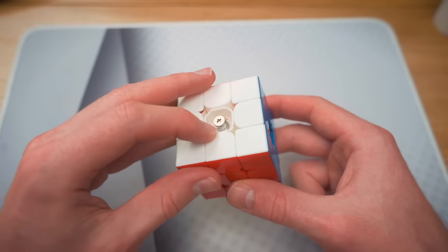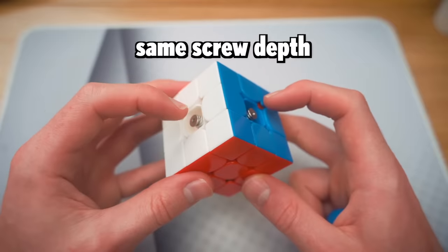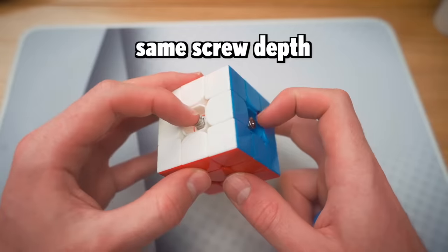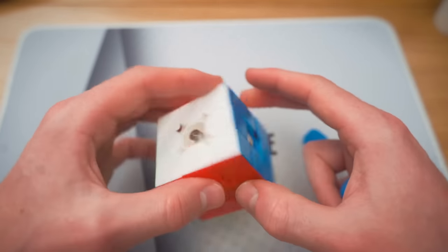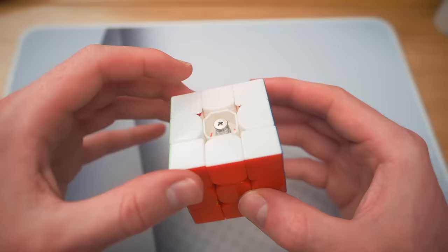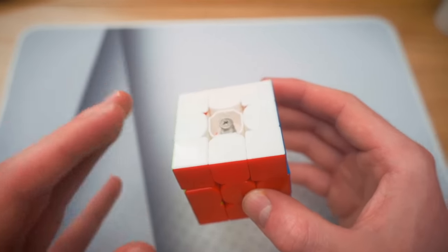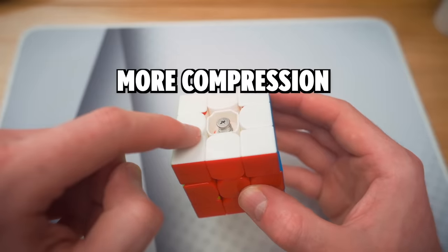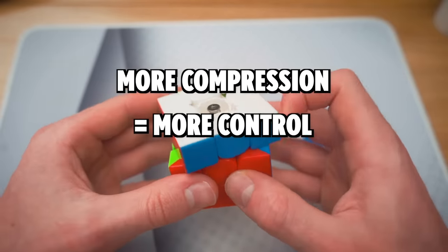The longer spring is on the white side and the normal spring on the blue side. Now, if I set both screws to the same setting, so basically the tightness of the cube, the corner cutting should be the same on both puzzles. The difference is that this spring is more compressed, thus the pieces are getting pushed more towards each other, so we have more resistance. So basically, a more compressed spring results in a more controllable cube.